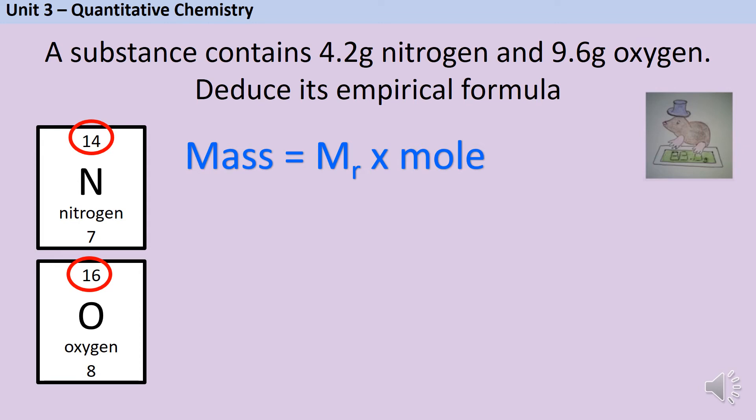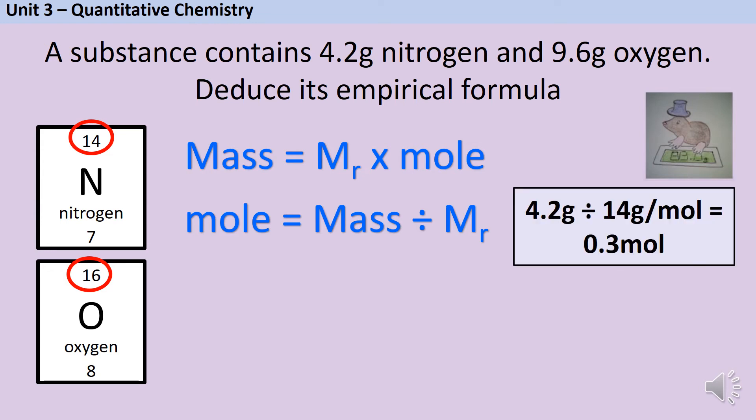If I rearrange that equation I get mole is mass divided by MR or AR. So in each instance I take the mass and divide it by the relative atomic mass. For nitrogen that means 4.2 divided by 14 grams per mole is 0.3 moles of nitrogen. If I do the same thing for oxygen I get 0.6 moles.